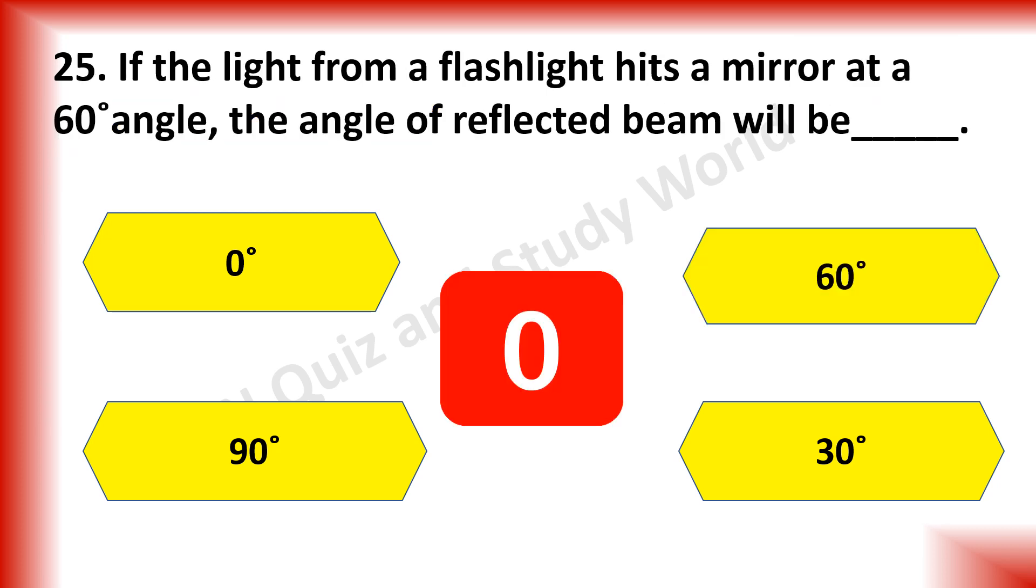If the light from a flashlight hits a mirror at 60 degree angle, the angle of reflected beam will be dash. Is it 0 degree angle, 60 degree angle, 90 degree angle, 30 degree angle?